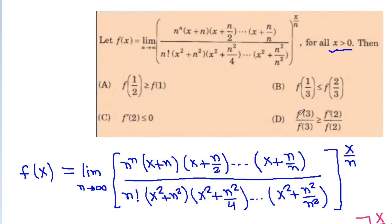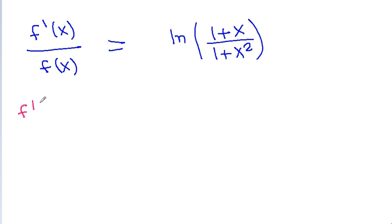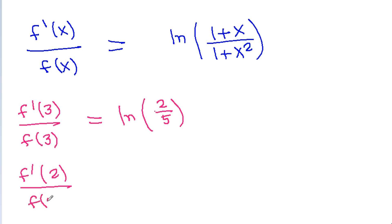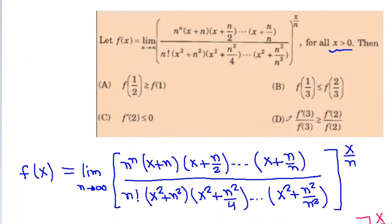Option D states f'(3)/f(3) ≥ f'(2)/f(2). Using our result: f'(3)/f(3) = ln(4/10) = ln(2/5), and f'(2)/f(2) = ln(3/5). Since ln(3/5) > ln(2/5), we have f'(2)/f(2) > f'(3)/f(3). So Option D is incorrect.